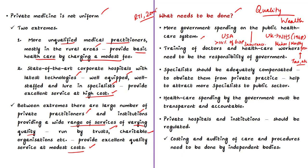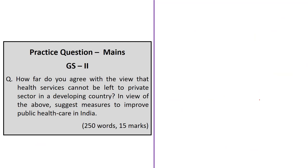With accountability comes responsibility, and with responsibility in health comes quality healthcare. With reference to private hospitals and institutions, the author states they should be regulated — costing and auditing of care and procedures should be done by independent bodies. One of the reasons for the dominance of the private sector is poor or mild regulation followed since independence. These are the important points from this editorial on the health sector in India.